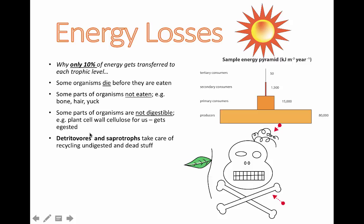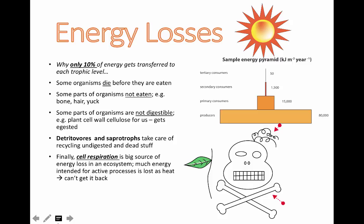Plant cell wall cellulose gets egested — meaning pooped out — not digested. We ingest it but can't digest it, so it gets egested. Detritivores and saprotrophs, which are types of decomposers we've talked about in previous videos, take care of recycling a lot of the undigested and dead material.